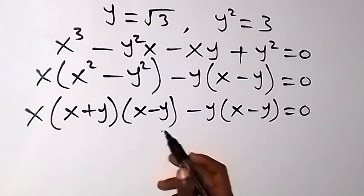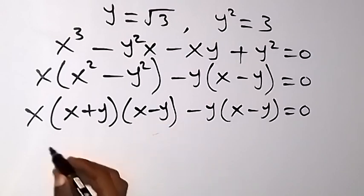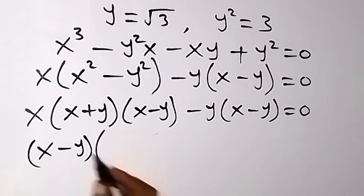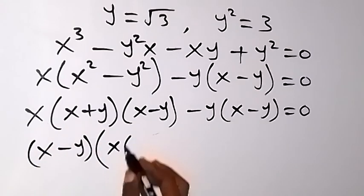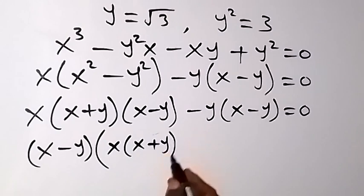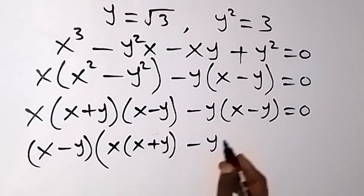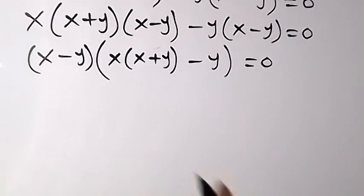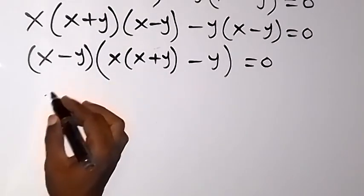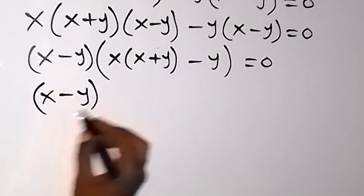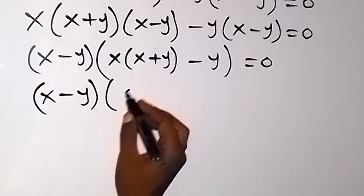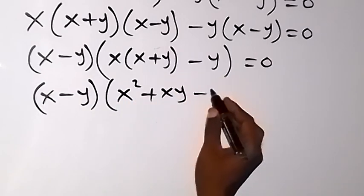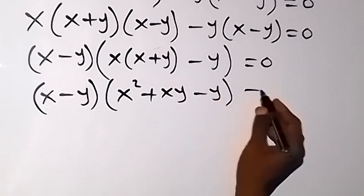So from here, x minus y is common. Let's take it out. We have x minus y out, then what is left here is x multiplied by (x plus y), then what is left here is minus y, then it equals 0. So when we open this bracket, inside here we have x minus y, then into bracket we have x squared, then plus xy, then minus y, which is equals to 0.